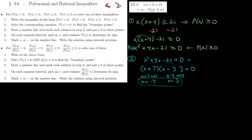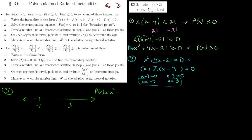Those are the solutions from step two. Now step three is to draw a number line and mark each solution on it. We place −7 on the left and +3 on the right. Our polynomial, again, is x² + 4x − 21, or in factored form (x + 7)(x − 3).